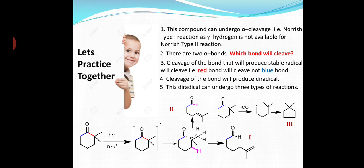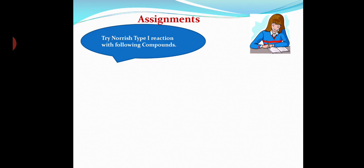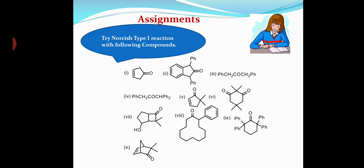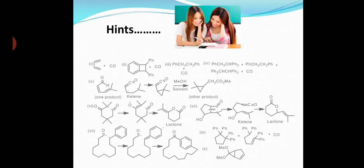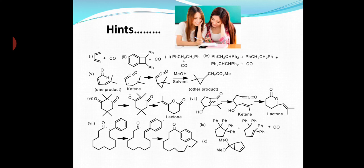I think we have discussed enough on Norrish Type 1 reaction; now it's time for you to try yourself and practice more examples. Here are some assignments for you — try Norrish Type 1 reaction with the following compounds. You will be happy to know that I have given you some hints. Please leave your answers in the comment section.